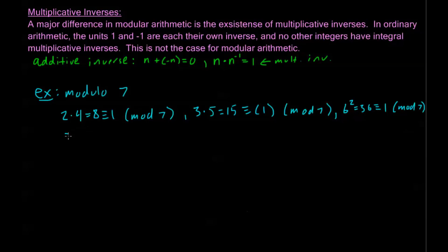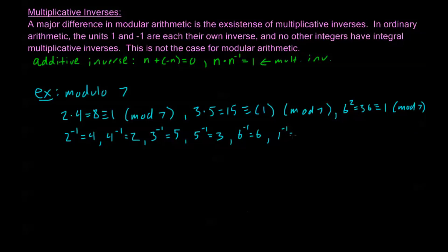So the way that we would write this is: 2-inverse equals 4, 4-inverse equals 2, 3-inverse equals 5, 5-inverse equals 3, 6-inverse equals 6, and 1-inverse equals 1. This worked out really nicely — everything in our residue class modulo 7 has an inverse. We're going to find out later that for a prime modulus, everything in the residue class other than 0 will have an inverse. And 0 will never have an inverse — you can't multiply something by 0 and get 1, and that carries over in modular arithmetic as well.